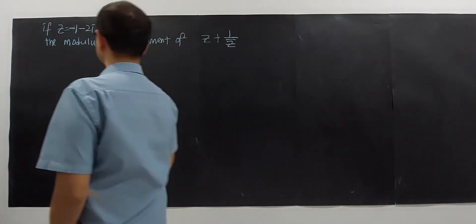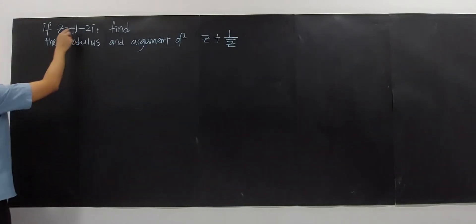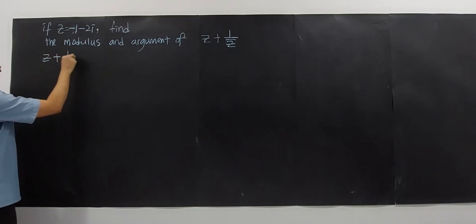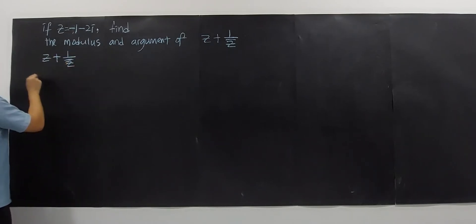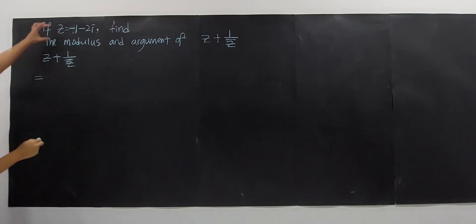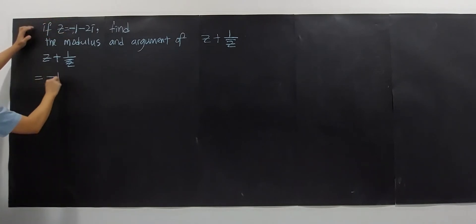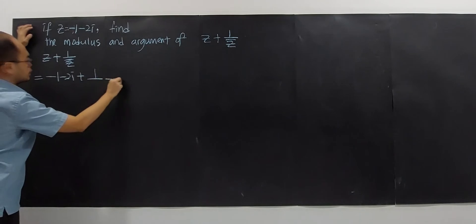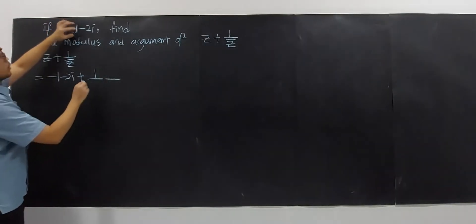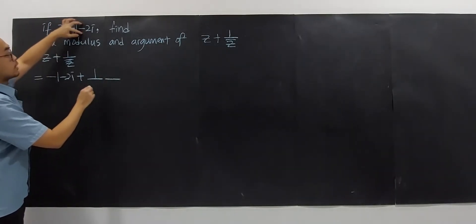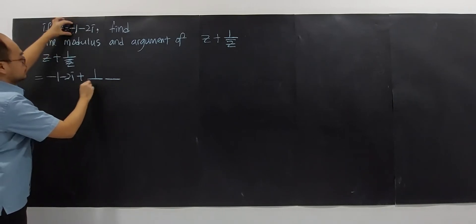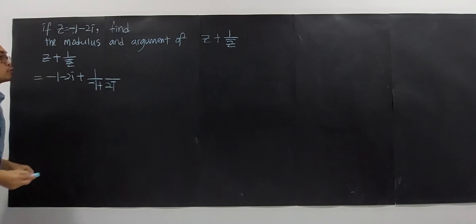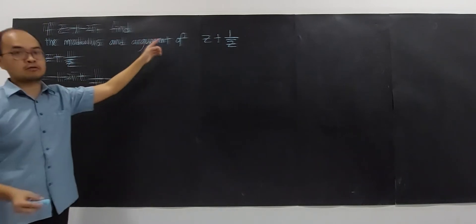Let's see how to solve this. We have Z equal to negative 1 minus 2i. So Z plus 1 over bar Z — we have to make sure we substitute the correct value: negative 1 minus 2i, plus the conjugate, which is negative 1 plus 2i. The conjugate is obtained by changing the sign in front of the imaginary part.